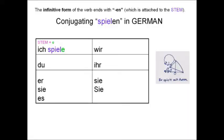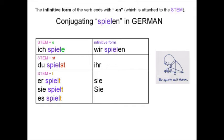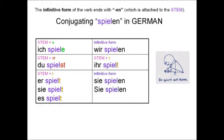For the du form, we take the stem and we add an ST — du spielst. For the er, sie, and es forms, we take the stem and add a T — er spielt. For the wir form, we just get to use the infinitive — wir spielen. For the ihr form, we take the stem and we add a T. And for the sie and sie forms, we just get to use the infinitive again — sie spielen.